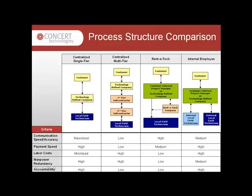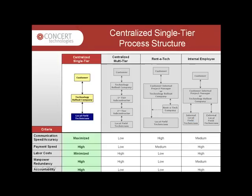Four are illustrated here, with the fifth being a hybrid structure. The hybrid structure may contain various parts of these four structures and will have its own advantages and disadvantages dependent on its configuration. Each process structure is evaluated in terms of communication speed and accuracy, speed of payment, labor costs, manpower redundancy, and overall accountability of the rollout.